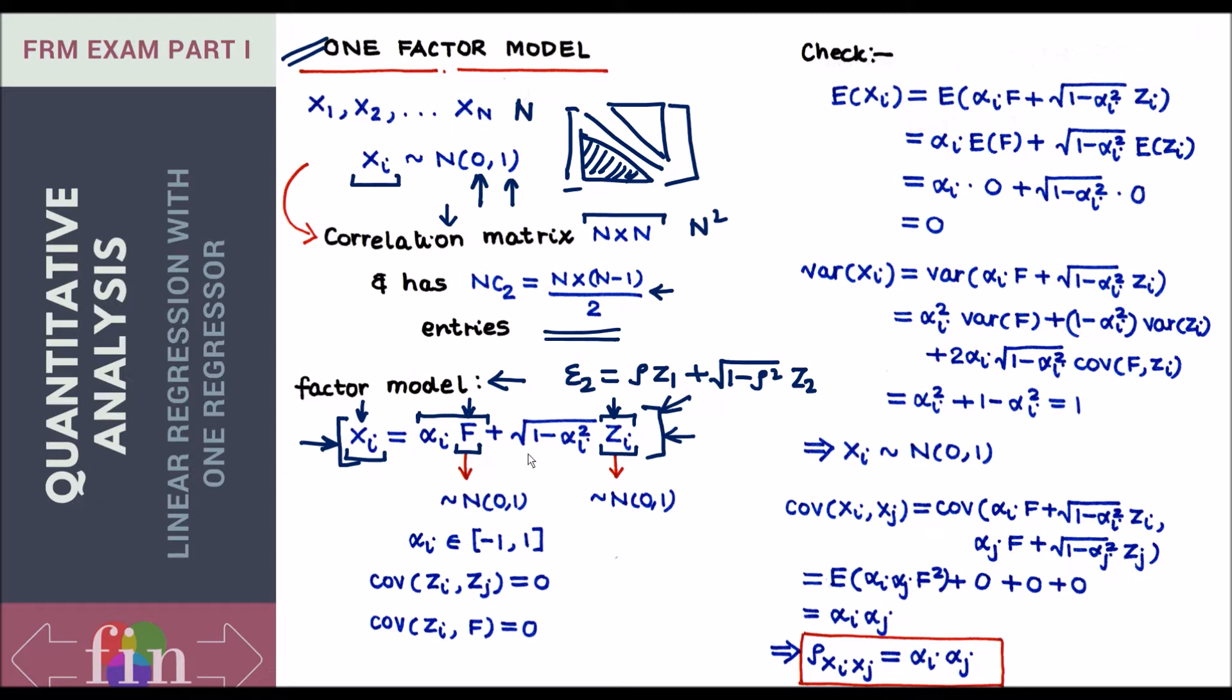To get this model working, what all do I need? Firstly for every asset I need to estimate this alpha i. For every asset I need this new variable zi. Let's talk about distributions of every variable. xi I know is standard normal distribution. Let's impose the same distribution assumption on both f and zi. So f is also standard normal, z is also standard normal. Now let's impose conditions with regards to dependence. Let's say there is no correlation between f and z number one. So f and z no correlation.